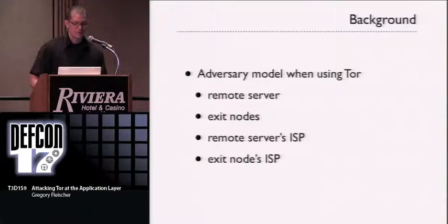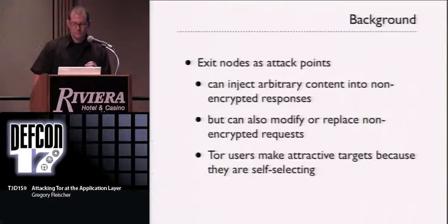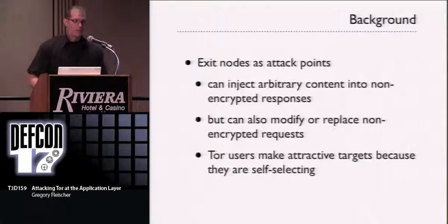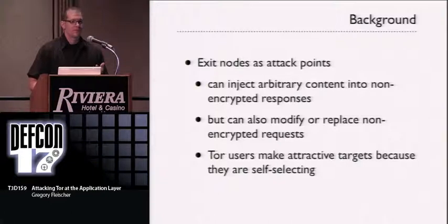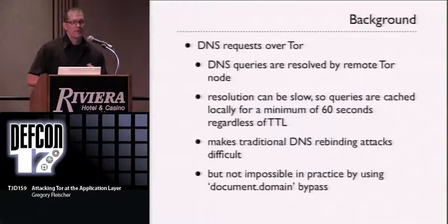Let's talk about the adversary model when using Tor. There are certain points in the Tor network where you're at risk at the application layer: the remote server, any exit nodes, the remote server's ISP, and the exit node's ISP. It's important to understand that exit nodes can be attack points — you can actually inject content into both requests and responses. Exit nodes can be used to attack you very easily, and this has been done in the past. Tor users make an attractive testbed for man-in-the-middle attacks.